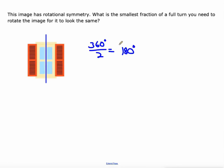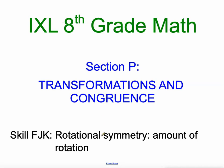You notice it has 180 degree rotational symmetry. It also has a line symmetry as well, or reflectional symmetry. All right, so that's how you figure out the amount of rotation, skill number three in IXL's eighth grade math section P, transformation and congruence.